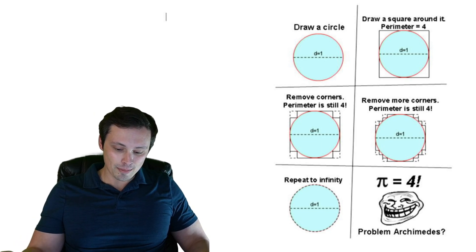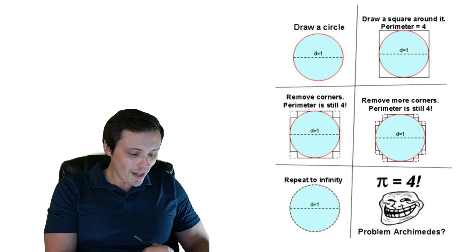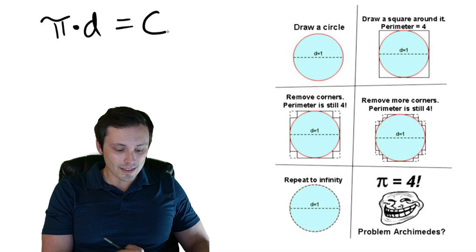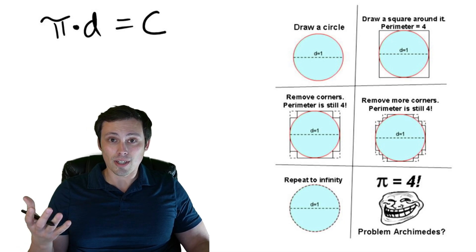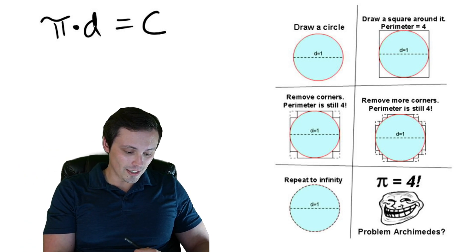We're making an argument that π equals 4, and then we're going to refute this argument. So draw a circle with diameter equal to 1. What does that even have to do with the value of π? Well, π is related to the diameter of a circle. π times the diameter of a circle is the circumference formula.